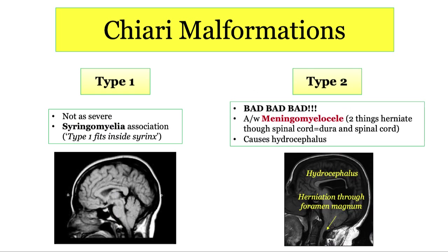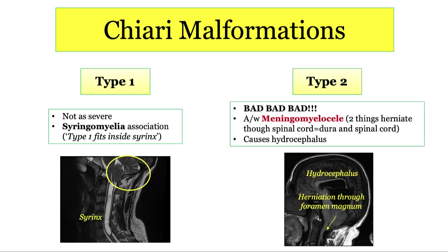Chiari 2 malformations are much more severe and happen when the cerebellar vermis and tonsils actually herniate through the foramen magnum. You can expect some hydrocephalus in infants from obstructed CSF flow, and the key association is with meningomyelocele. With Chiari 2, you can get two things herniating through the spine: the dura and the spinal cord — that should keep Chiari 2 together with meningomyelocele. The NBME will come after you with a sagittal MRI plus non-specific symptoms like headache and ataxia in an infant or young adult. If they show you a sagittal MRI, immediately look at the cerebellum for Dandy Walker versus Chiari malformation.